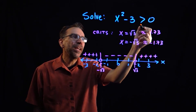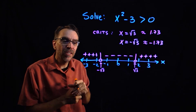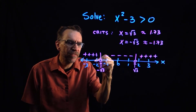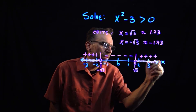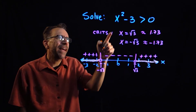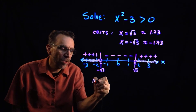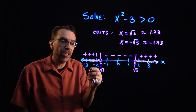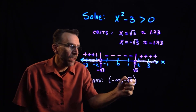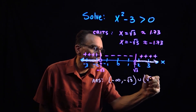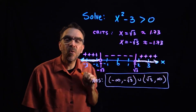The question is: when is this quadratic greater than 0? Greater than 0 means positive, or above the x-axis. From the sign chart, the y-values are positive for x-values in the leftmost and rightmost regions. In interval notation, the solution is negative infinity to negative square root of 3 with a parenthesis — non-inclusive — union square root of 3 to infinity.